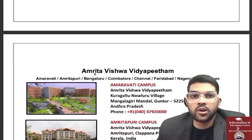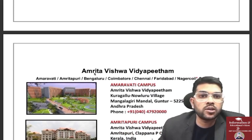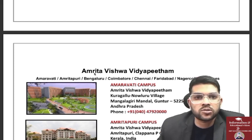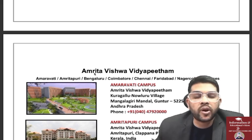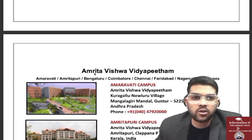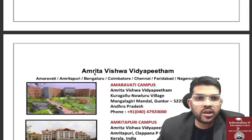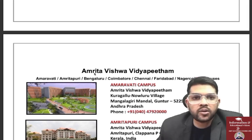This year they are doing something problematic — before the result they are providing the registration link and choice filling. Without the result or rank, how will a student provide the preference list or know what chances they have for a college? If you want, based on first attempt results, JEE results, or expected marks in the second attempt, I can provide you the preference list.